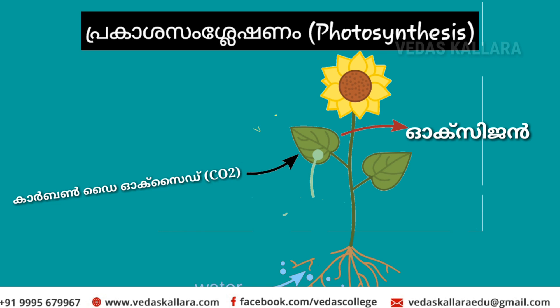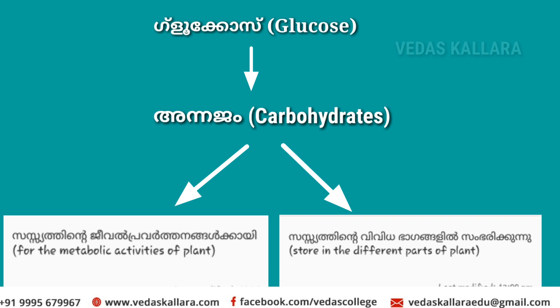The oxygen released goes out while plants perform Pragash Samsleshanam. The carbon dioxide absorbed during photosynthesis is converted and the by-product oxygen is released. The glucose produced during photosynthesis is very quickly converted into carbohydrates or starch by the plants.